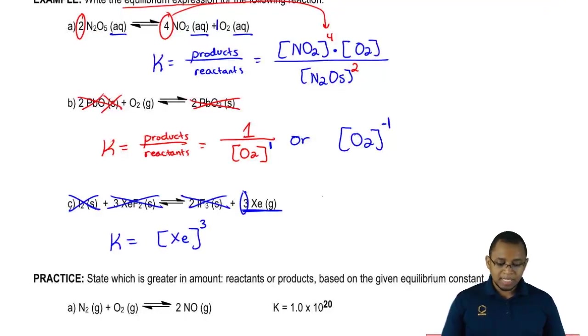But we don't need to put the 1 because anything over 1 is the same exact thing. So that would be our equilibrium expression. So A was pretty simple, but remember the differences in B and C. We ignore the solids and the liquids. Now that you've seen this, I want you guys to attempt to answer a question that follows this one, the practice one.